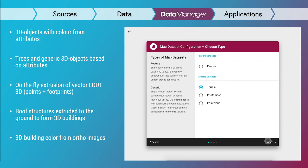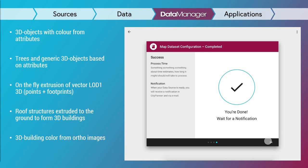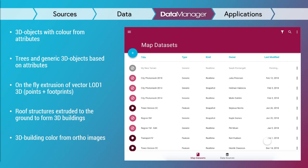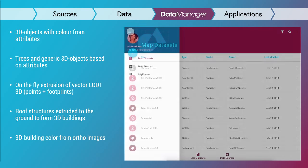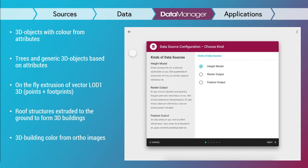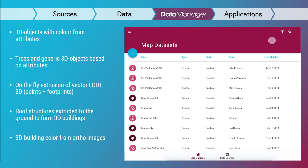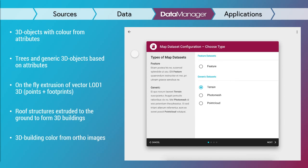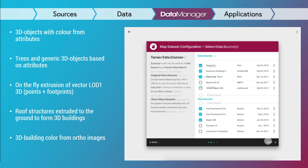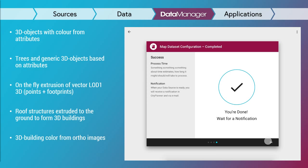Things we are also looking to add in the future: on-the-fly extrusion of LOD1 buildings from vector footprints and laser data or attributes — we can create these LOD1 buildings automatically in Data Manager. Or if you have 3D roof structures already mapped, there will be tools to extrude them down to the ground to form 3D buildings. Another thing we may add in the future is automatic color from ortho images — setting the color of a building matched from a mean value of the ortho image over that building.